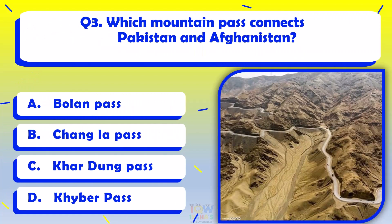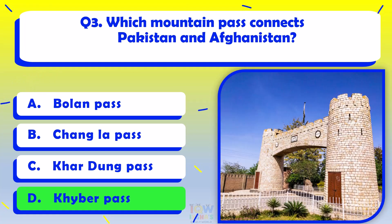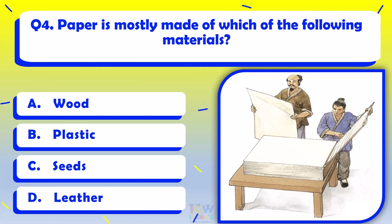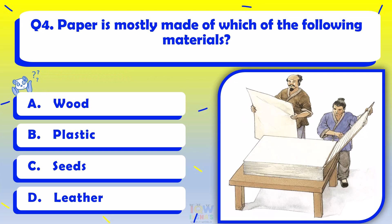Which mountain pass connects Pakistan and Afghanistan? Khyber Pass. Paper is mostly made of which of the following materials? Wood.